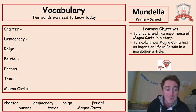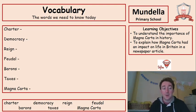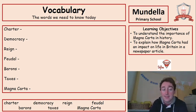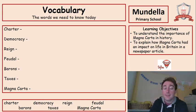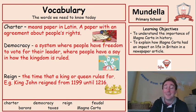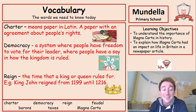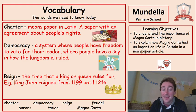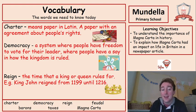First of all, we need to know some words. A charter is a piece of paper that sets out rules. Democracy is a free place to live. Reign — that's a time that a king or queen rules for. King John reigned for 17 years in the end, from 1199 until 1216.